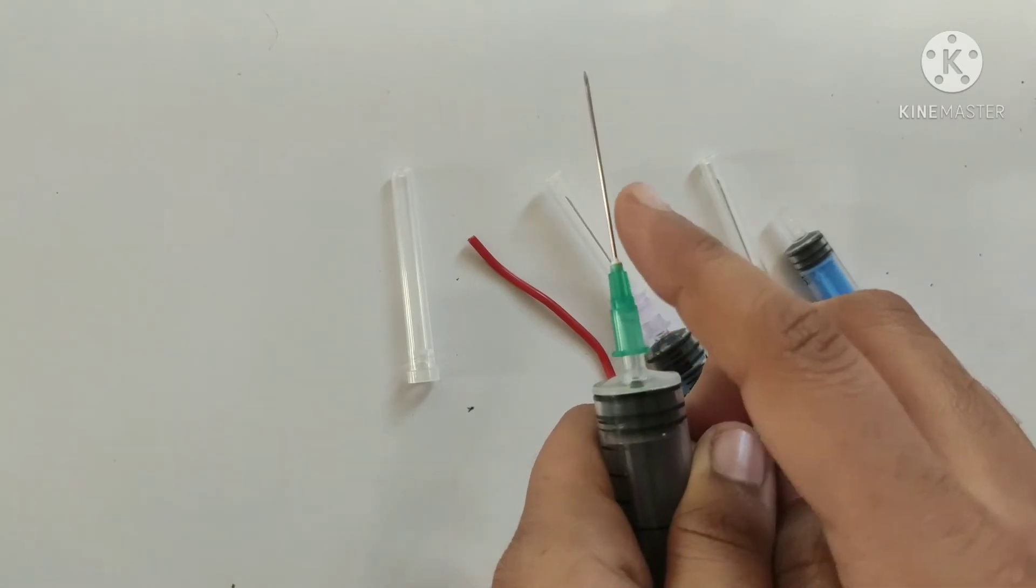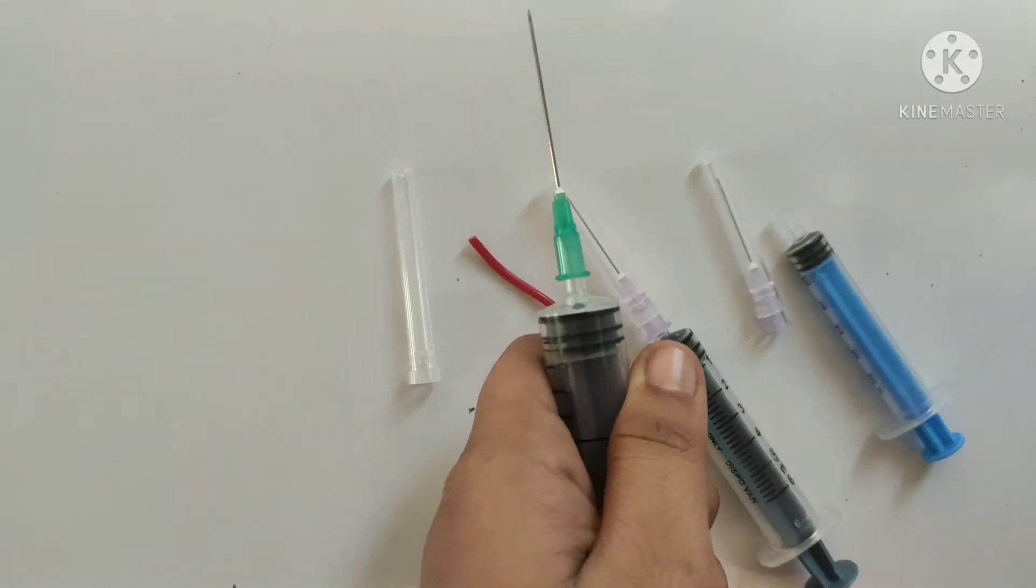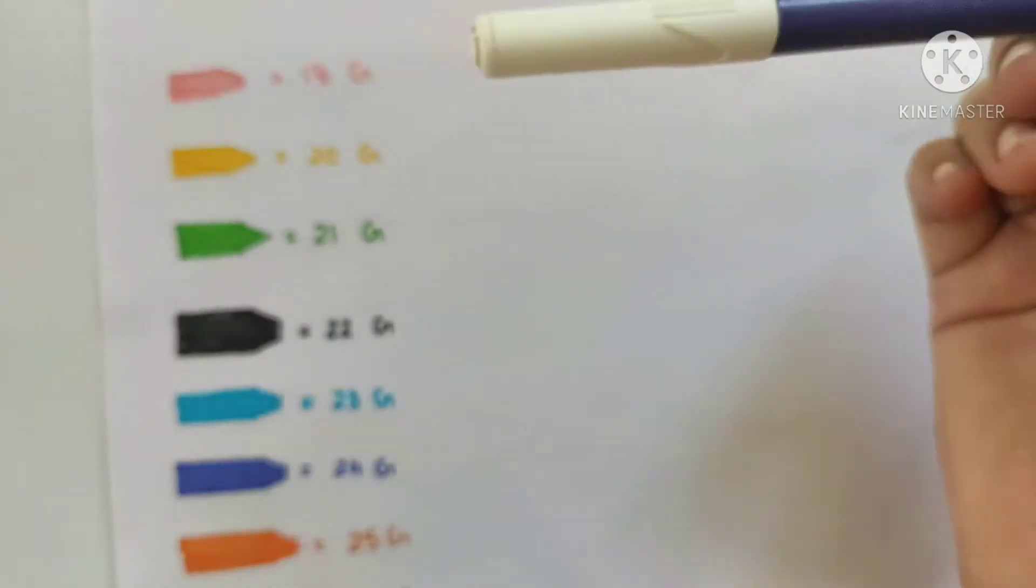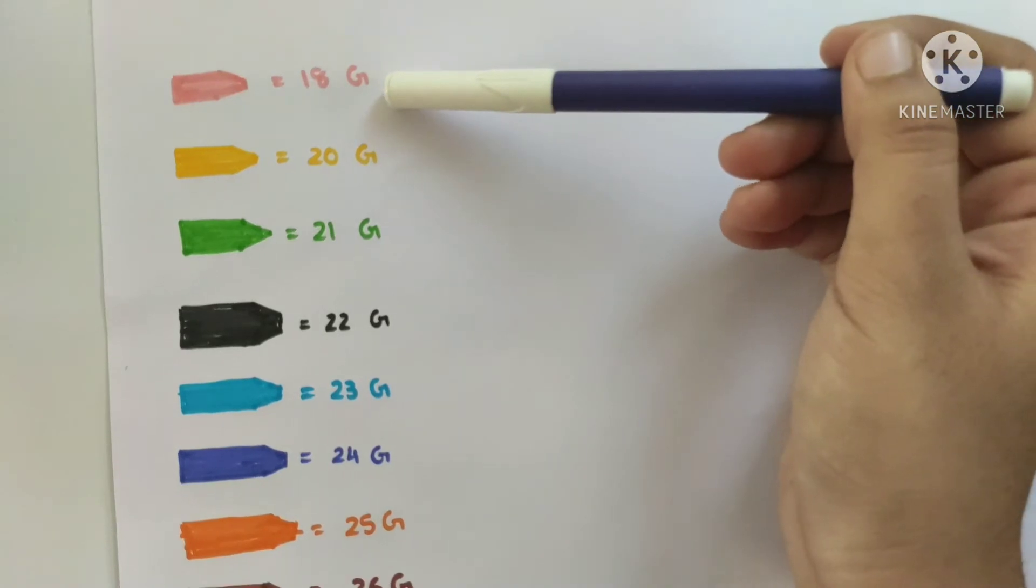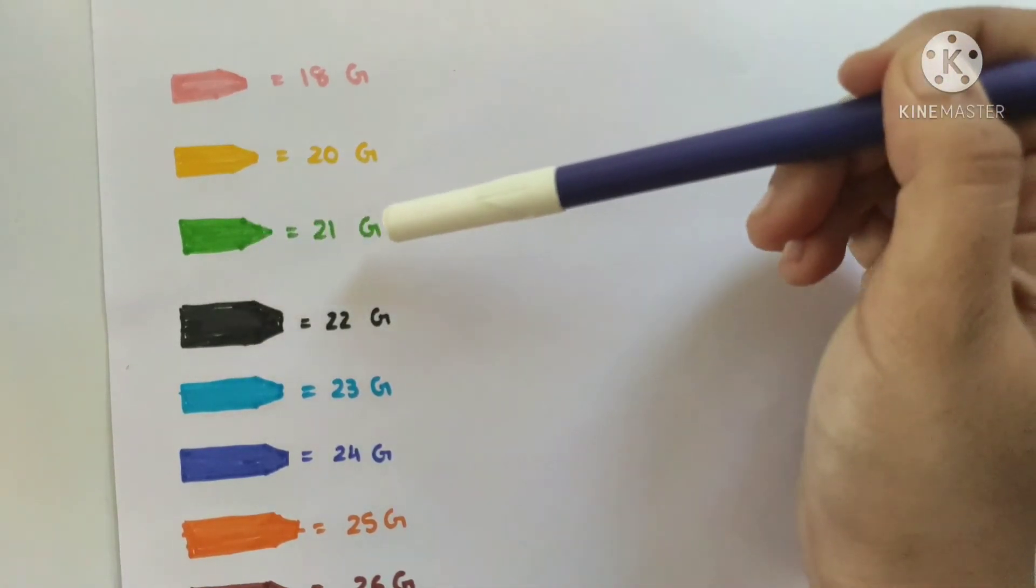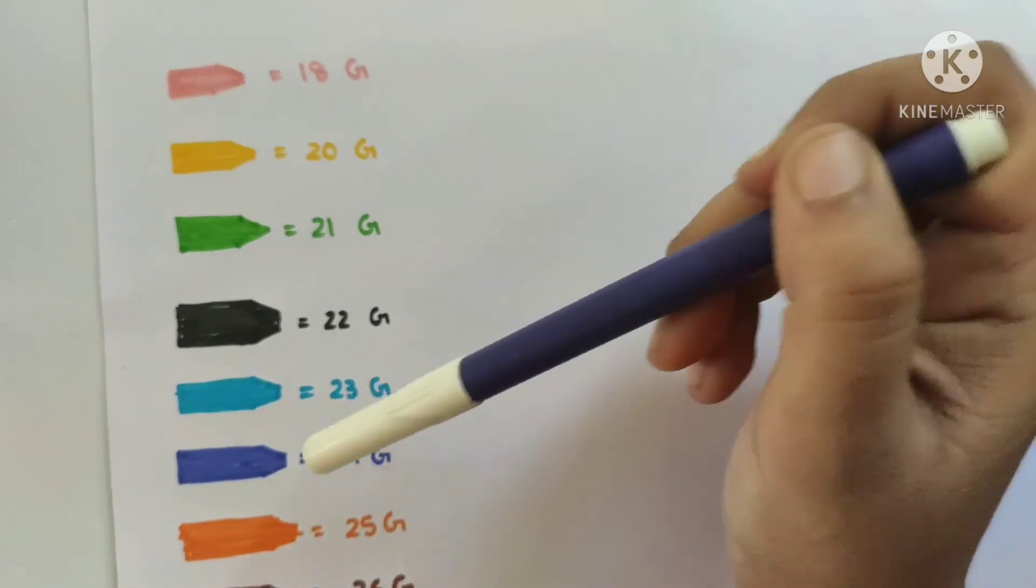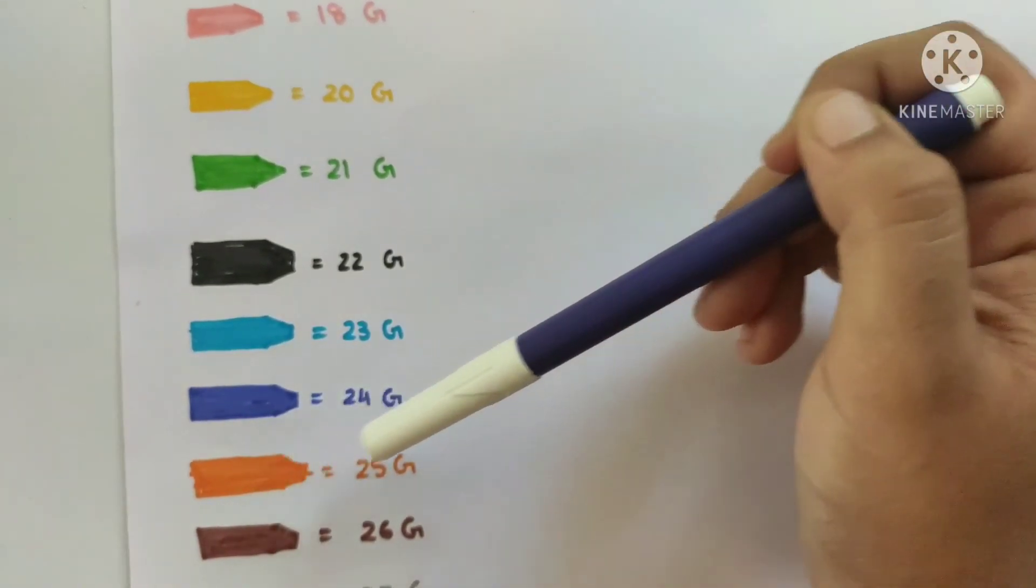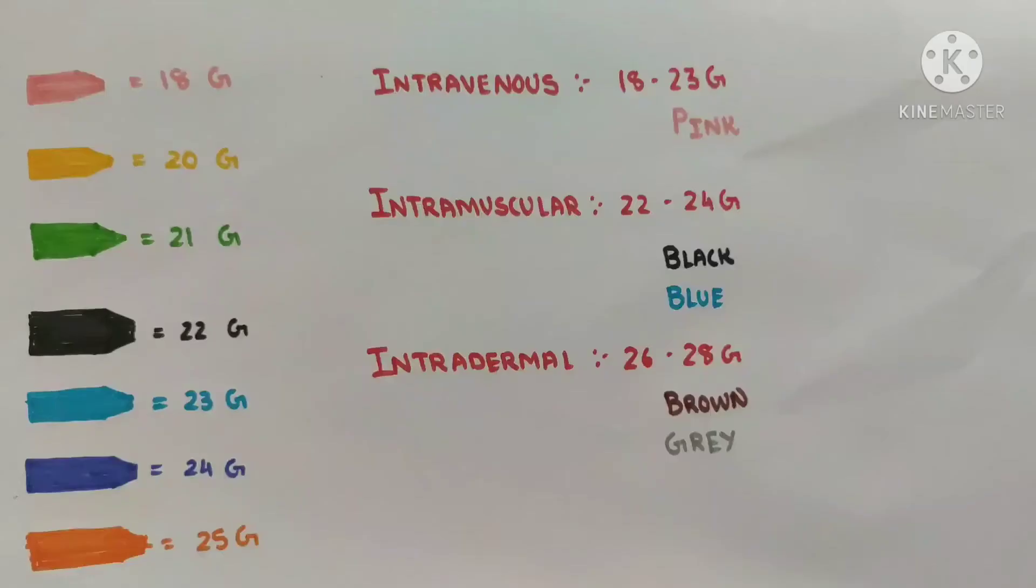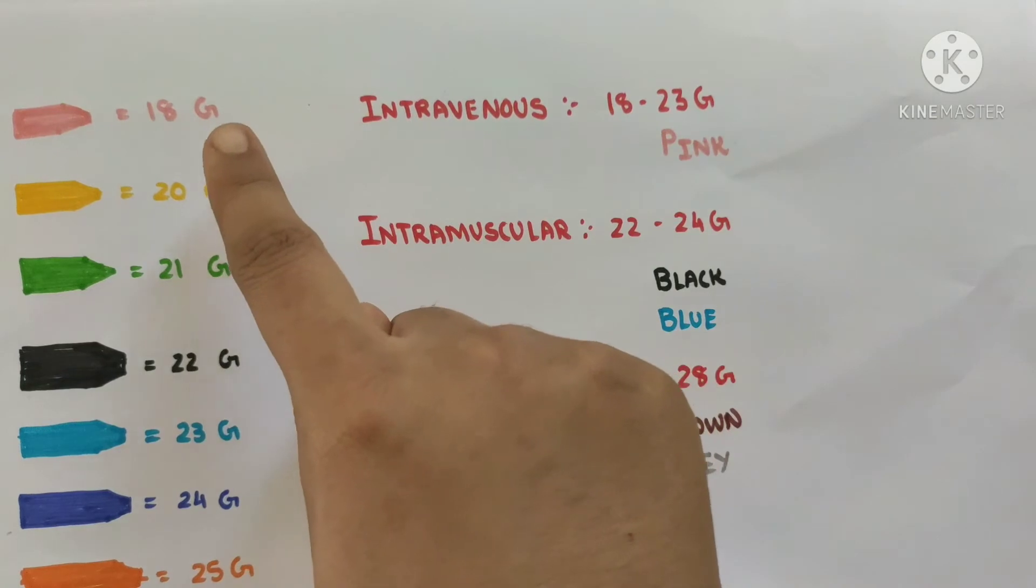Now let's look at the different colors of the hub which indicate different gauge. When it is pink color, it means it is 18 gauge. Yellow indicates 20 gauge, green 21, black 22, blue 23, purple 24, orange 25, brown 26, and gray indicates 27 gauge. So smaller the gauge, as we can see here, larger will be the diameter.